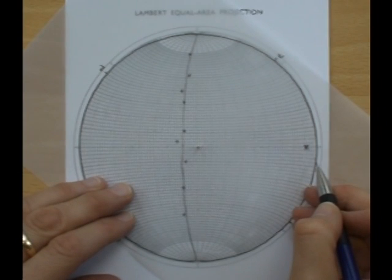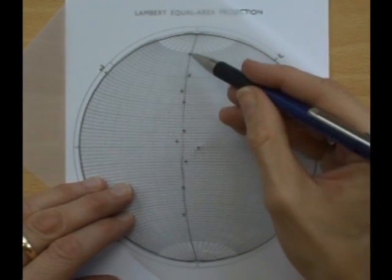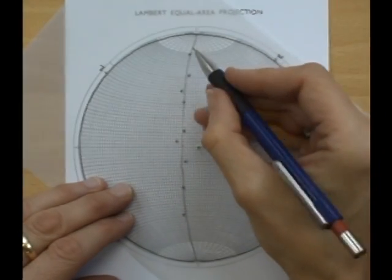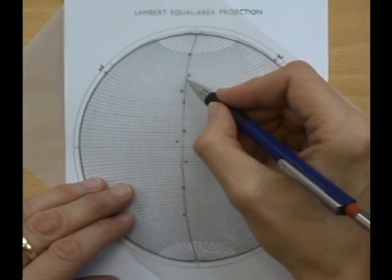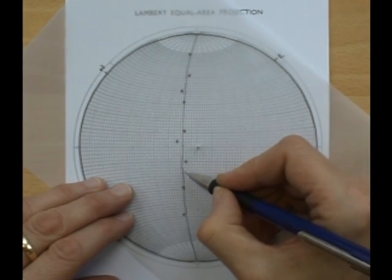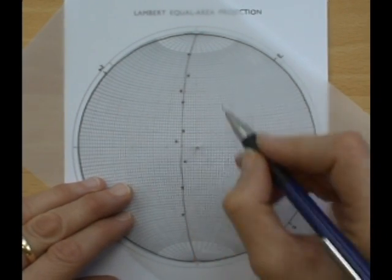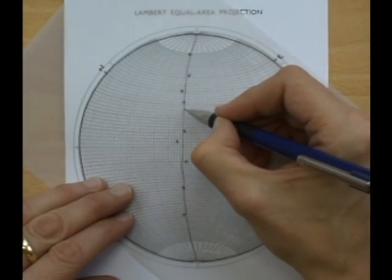The next thing we can do is find the axial plane and we do this by dividing the spread of the poles. So in this case we've got 10, 20, 30, 40, 50, 60, 70, 80, 90, 100, 110, 120 degrees. So our midpoint will be at 60 degrees.